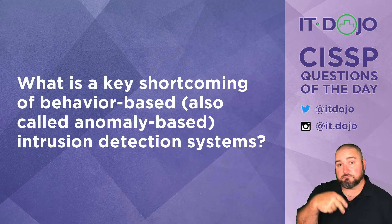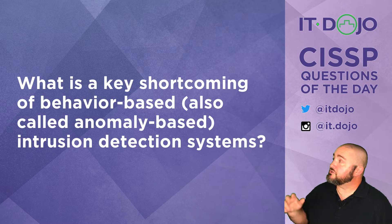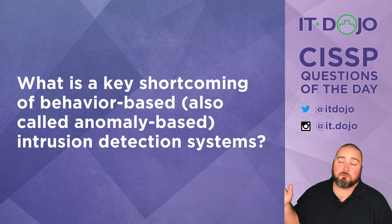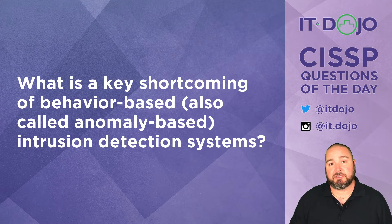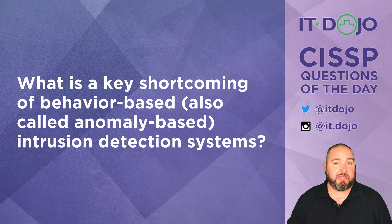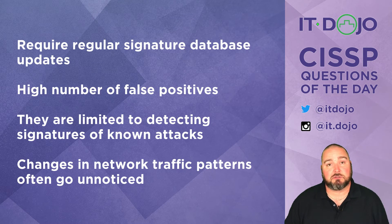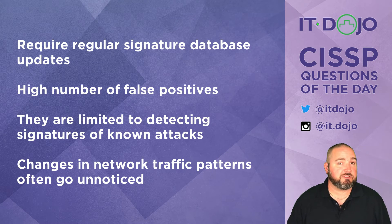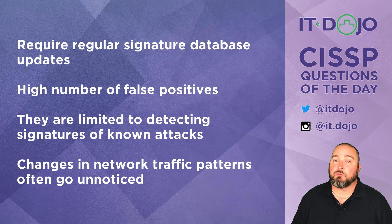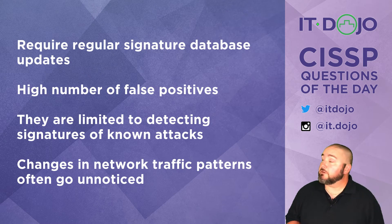Question number two: which of the following answer choices is one of the shortcomings of anomaly-based intrusion detection systems? Give those a thought, click pause if you need to, and when you're ready click play and we can talk it through.